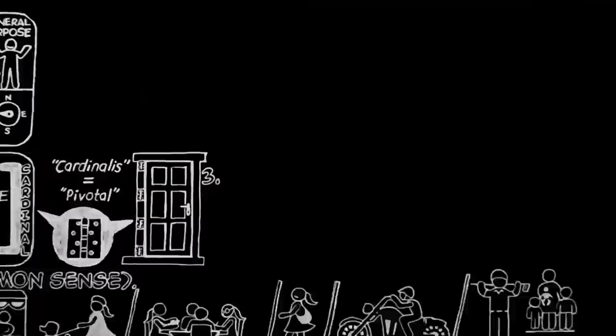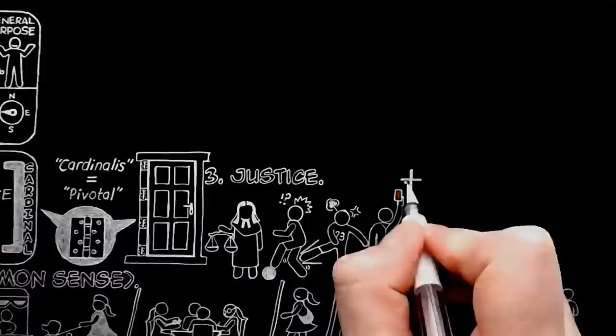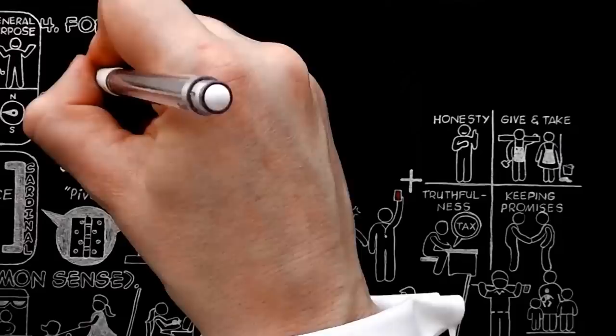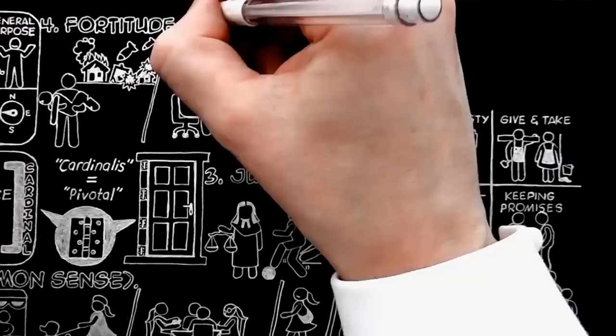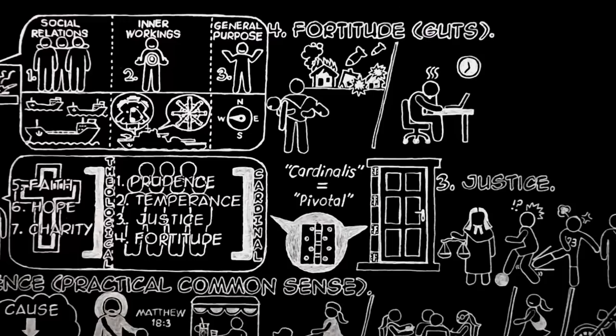Justice means much more than the sort of thing that goes on in law courts. It is the old name for everything we should now call fairness. It includes honesty, give and take, truthfulness, keeping promises, and all that side of life. And fortitude includes both kinds of courage, the kind that faces danger, as well as the kind that sticks it under pain. Guts is perhaps the nearest modern English. You will notice, of course, that you cannot practice any of the other virtues very long without bringing this one into play.